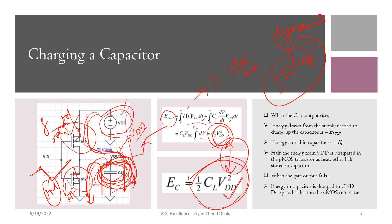We cannot completely remove this power dissipation but we can minimize it. To summarize: when the gate output rises, the energy drawn from the supply to charge the capacitor is E_VDD = CL·VDD², and the energy stored in the capacitor is E_C = (1/2)·CL·VDD². Half the energy from VDD is dissipated in the PMOS transistor as heat and the other half is stored in the capacitor. When the gate output falls, the energy stored in the capacitor is dumped to ground and dissipated as heat in the NMOS transistor.